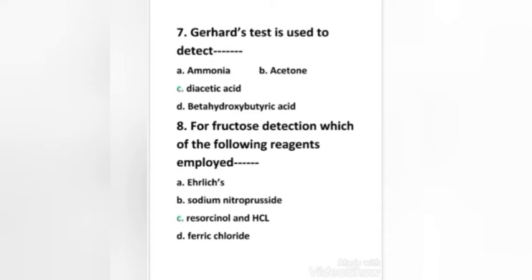Next question: Rothera's test is used to detect: ammonia, acetone, diacetic acid, or beta-hydroxybutyric acid. Right answer is option C, diacetic acid. Diacetic acid is also known as acetoacetic acid.